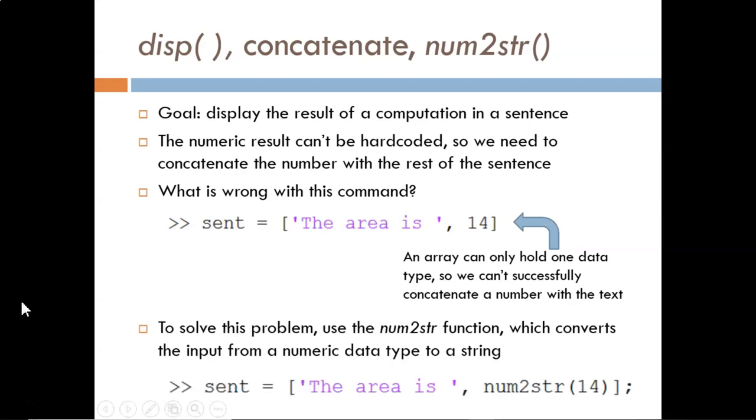To get around this, we need to use the numToString function as shown here. This simply converts an input from the numeric data type to a string data type, allowing it to be included in a sentence.